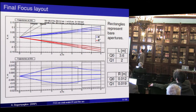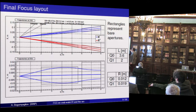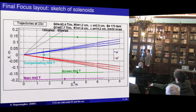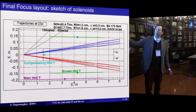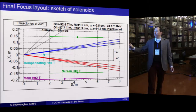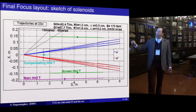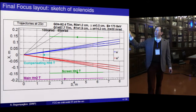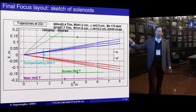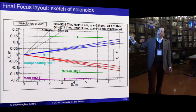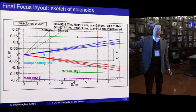This is how the design looks — there's the crossing angle of 30 millirads in X, and in Y there's no crossing angle. The two final focus quadrupoles start at 2 meters, going all the way to 5.5 meters. Here is a blow-up of this region with a sketch of the solenoids. This is my 100 millirad line; I'm trying to stay clear of that. My two quadrupoles are clearly inside this. The main magnetic field is 2 Tesla in this case and goes all the way to 6.5 meters from zero, so it's 13 meters long.